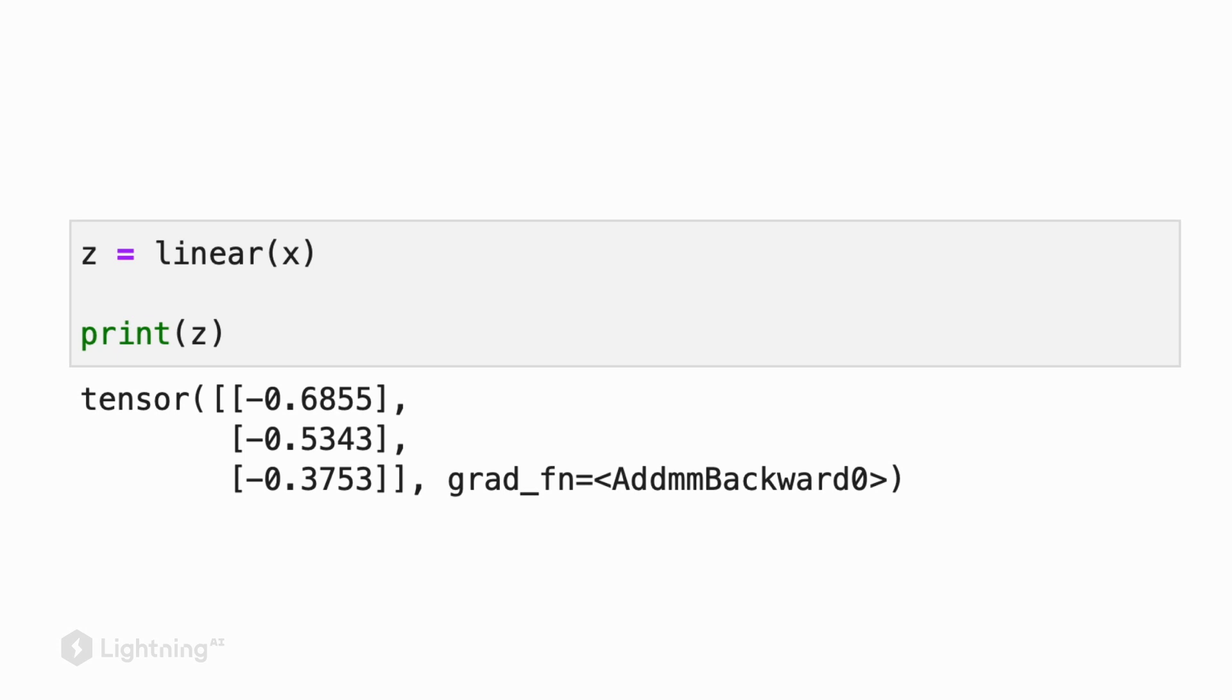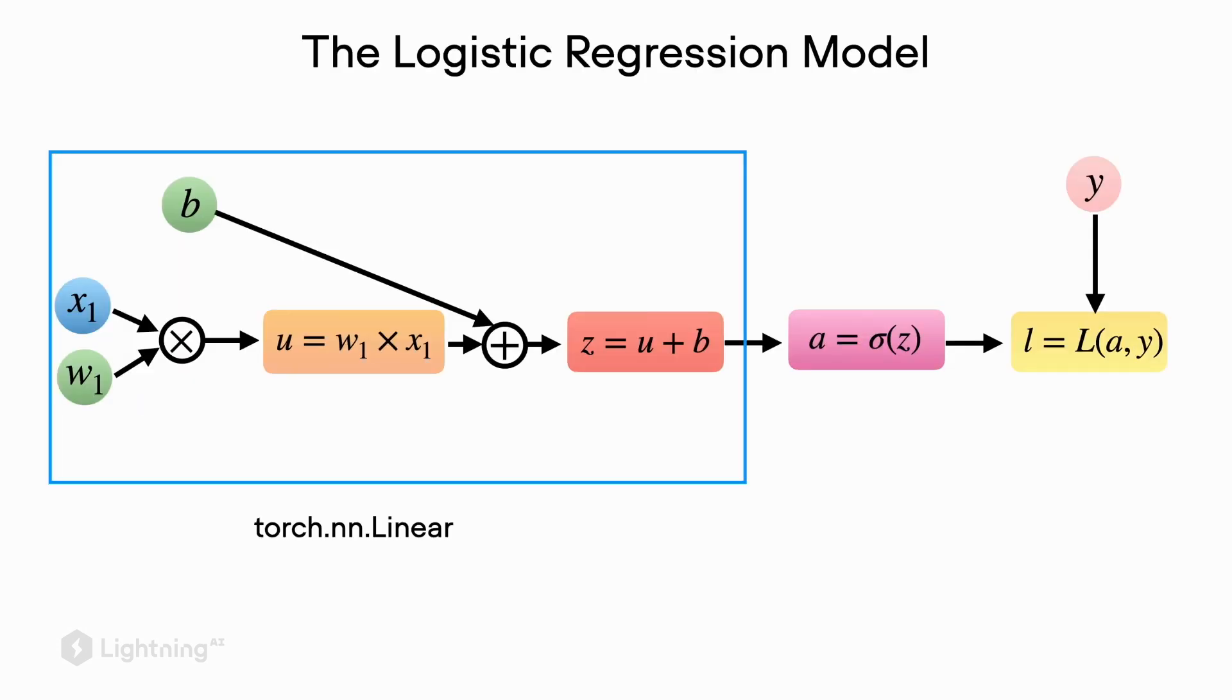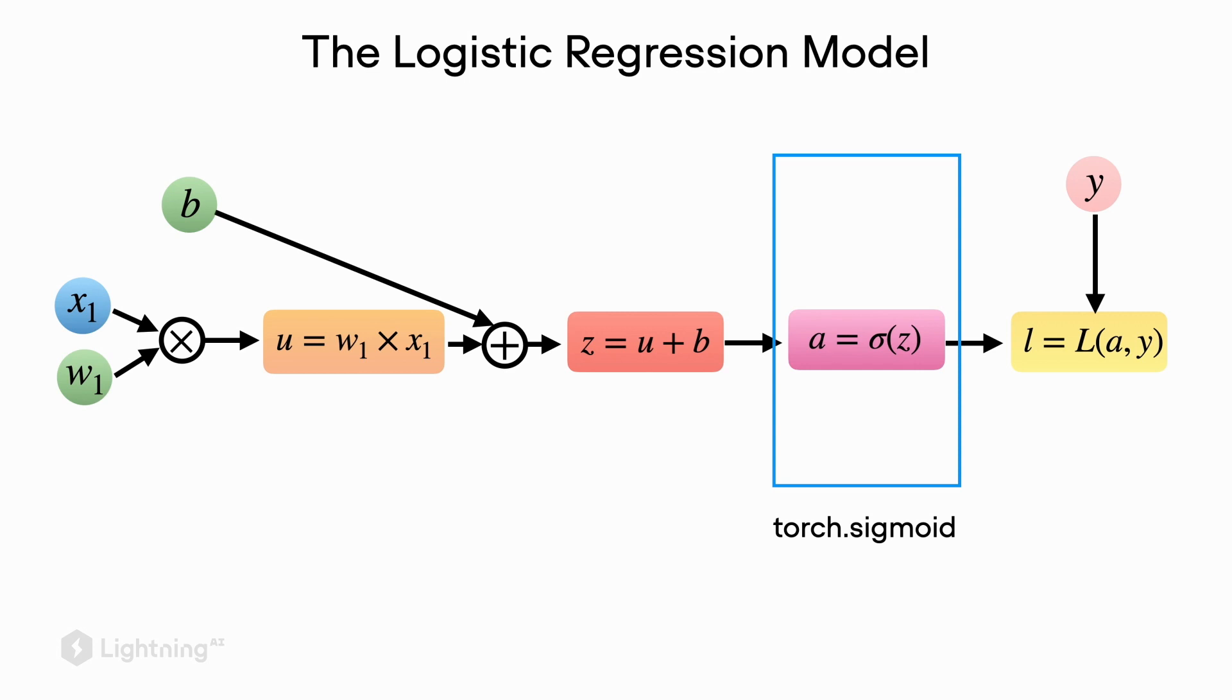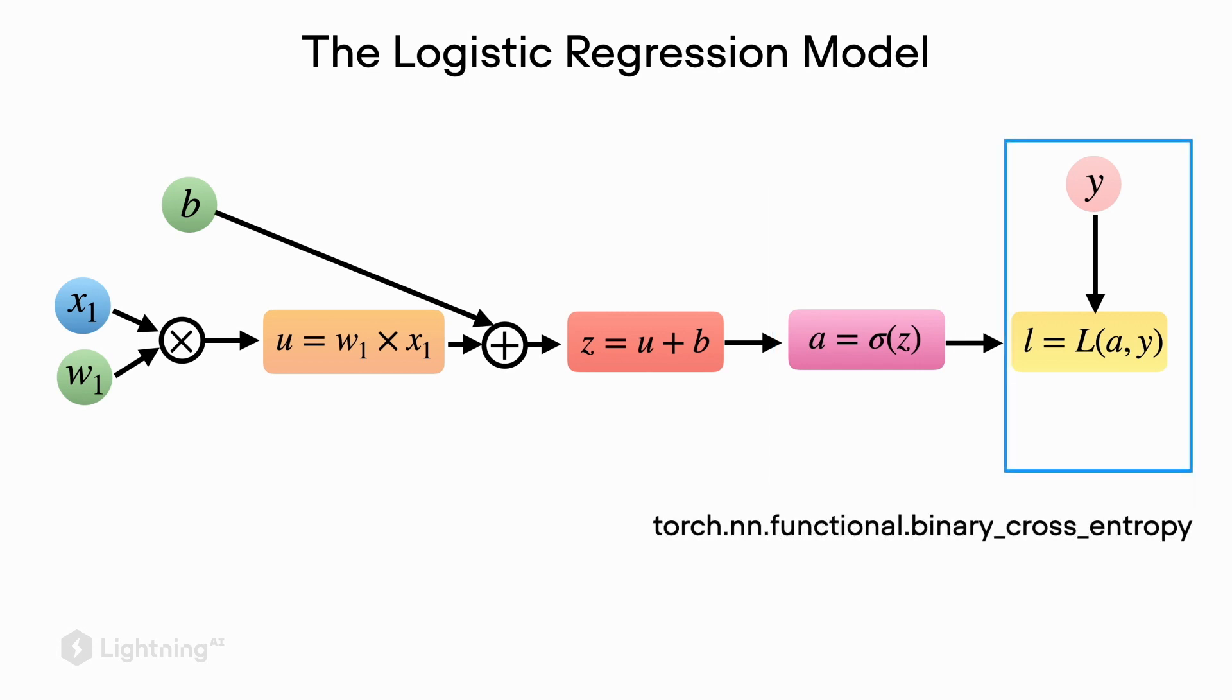We just saw how we can use torch.nn.Linear to take care of the net input in the logistic regression model. There's also a convenient function torch.sigmoid to compute the activation of the logistic regression model, and we also already saw that there's a binary cross entropy function in PyTorch that takes care of the loss computation for us.